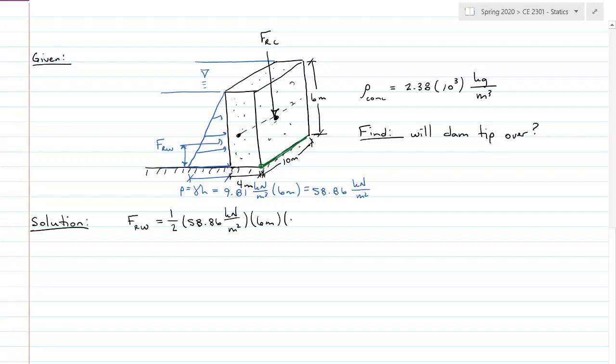And this time I was given a depth into the page, 10 meters, so my water is striking with a force of 1765.8 kilonewtons. And it is acting two-thirds from the surface, y bar is equal to two-thirds of 6 meters, which is 4 meters from the top, equals 4 meters.